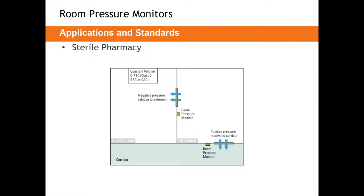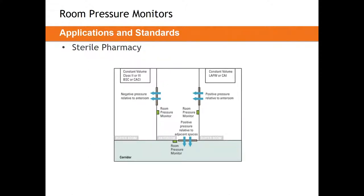You do have the option of measuring from the corridor to the anteroom and from the corridor directly to the buffer room. This is a little bit more stable and helps diagnose problems — wherever an issue occurs, whether a motor has failed or controls are over-tuning, you can directly identify which room it's happening in. The downside is that the pressures in the standards (0.01 to 0.03 or positive 0.02) aren't directly what you'll measure; you have to infer the correct pressure, making it a little harder for facility staff.